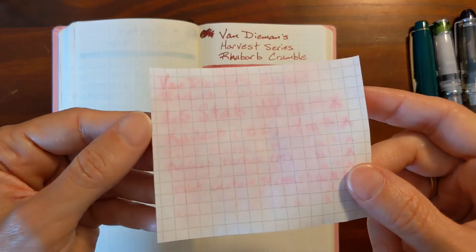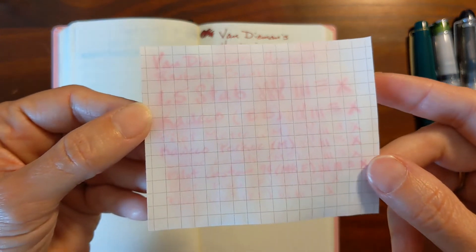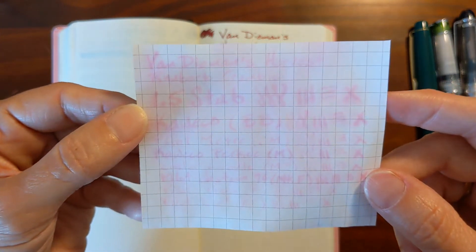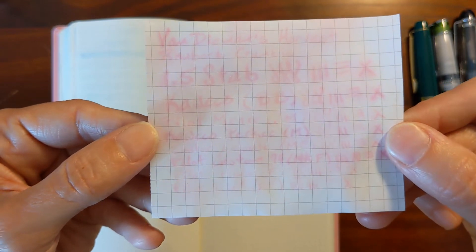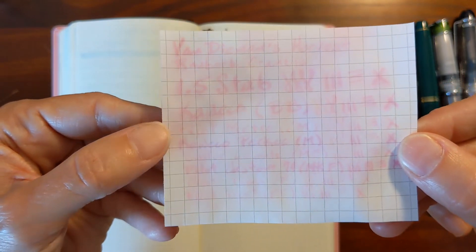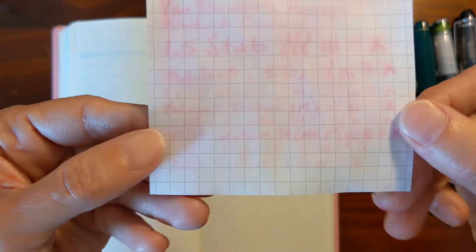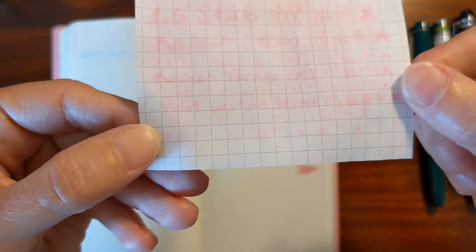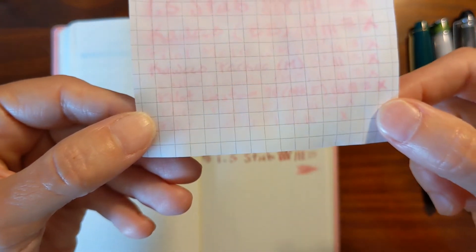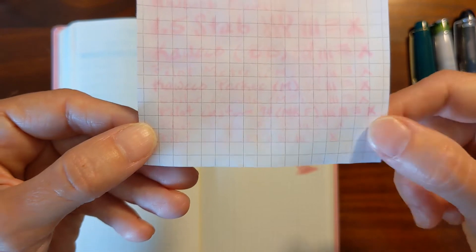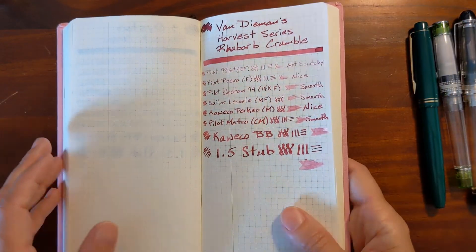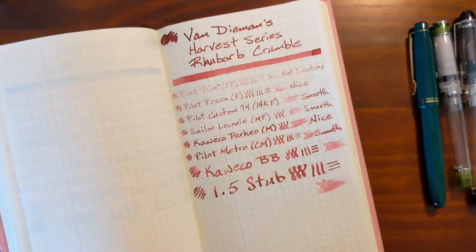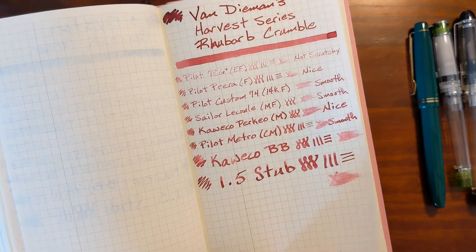In my water resistance test, you can see most of the ink washed away. I'm able to read some of what I wrote in the wetter nibs and the wider nibs, but in those fine nibs, it would be difficult to read your writing. And since this was such a wet writing ink, I'm curious to see the back of my Tomoe River writing sample.